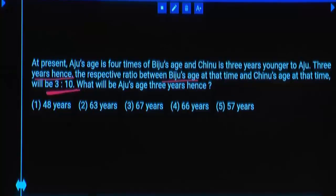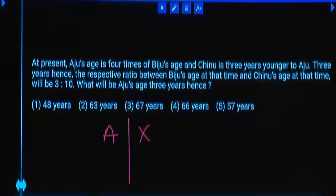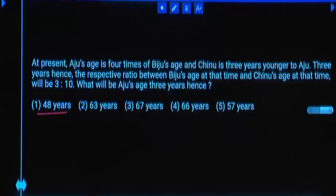3 multiple means present is also 3 multiple. So you know that present age of Biju is a multiple of 3, but Aju's age is 4 multiple. 4 multiple and 3 multiple together means 12 multiple. So you can conclude Aju's age is a 12 multiple, but you are asked to calculate Aju's age after 3 years. So if you subtract 3 years, it should be 12 multiple. Check: 1st option minus 3 — is that 12 multiple? No.